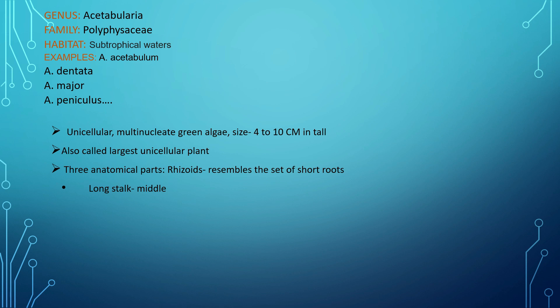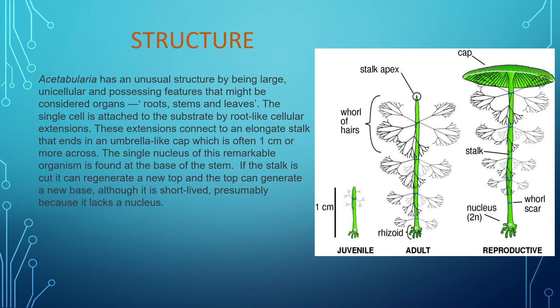There are mainly three anatomical parts in the Acetabularia organism. The first is the rhizoids, which resemble a set of short roots and give a root-like structure. The next one is the long stalk, situated in the middle of the organism. The last one is the top umbrella-like branches, which give a cap-like structure to the organism.